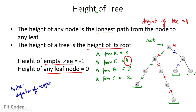The correct definition of height, as per this video, is the maximum number of edges that a node is far from the leaf nodes. In this example, node A is 4 edges apart from the leaf node, so the height of this tree is 4. We will use this definition to calculate the height of each node.